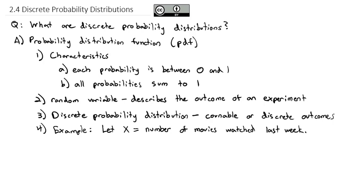That's a discrete random variable because you only can watch a certain number of movies. We can't do decimals. You either watched it or you didn't. So because this is a countable result, it's a discrete result. And we can collect discrete data.